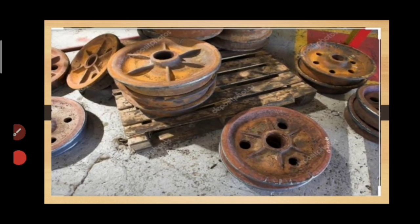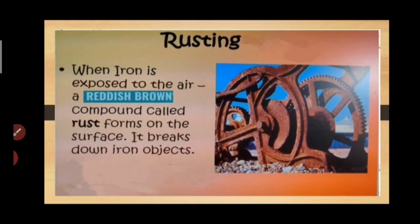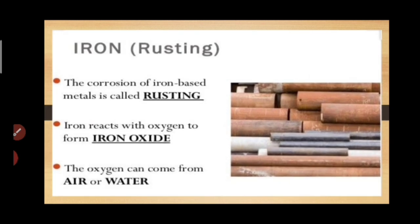Oh my god, what is this? These are a few substances made up of iron, but what is that reddish-brown color on them? This is rusting. When iron is exposed to air, a reddish-brown compound called rust forms on the surface, breaking down the iron objects. Rusting is the corrosion of iron-based metals.